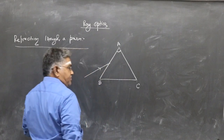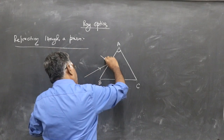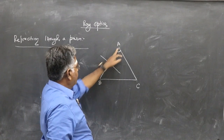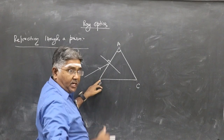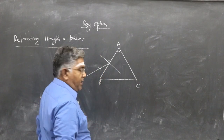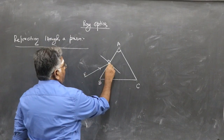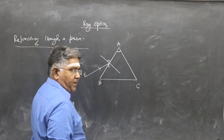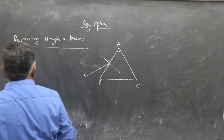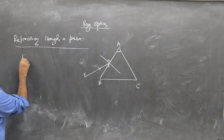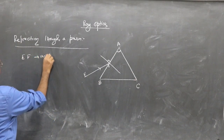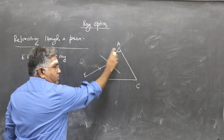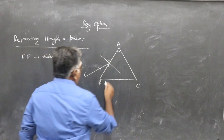At the point of incidence on the first refracting side, we draw a normal — this makes 90 degrees. EF is the incident ray. The angle of the prism A is marked at the apex.